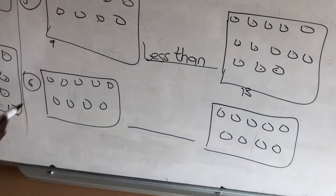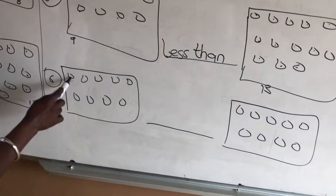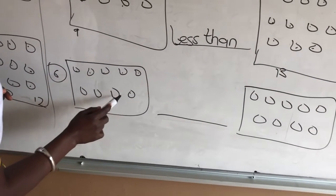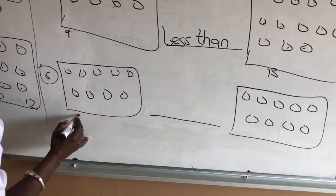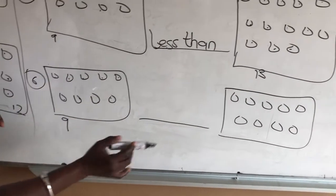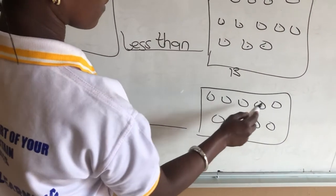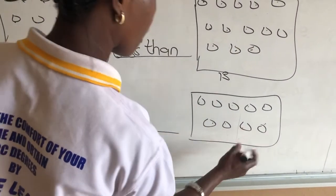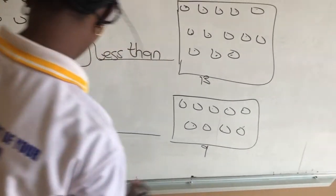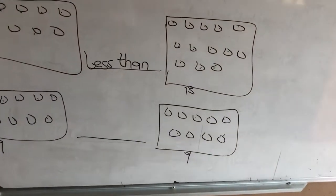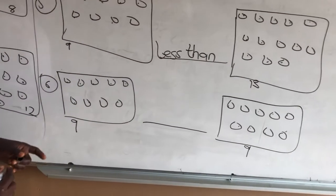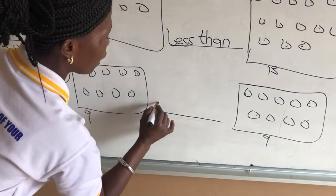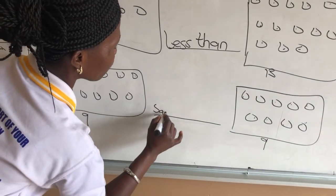The last one. Let's go: 1, 2, 3, 4, 5, 6, 7, 8, 9. We have 9 members here, and we have 9 members on the other side too. So what will you tell me? Same as.